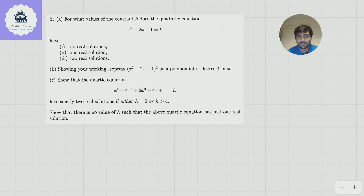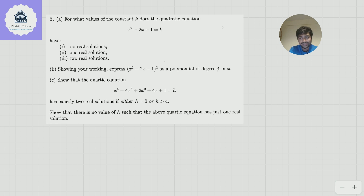Let's have a look at this problem. For what values of the constant k does the quadratic equation x squared minus 2x minus 1 equal k have no real solutions, one real solution, or two real solutions? Part B: showing your working, express x squared minus 2x minus 1, all squared, as a polynomial of degree 4 in x. Part C: show that the quartic equation equals h has exactly two real solutions if either h is 0 or h is bigger than 4, and show that there's no value of h such that the quartic has just one real solution. So this is all to do with quadratics leading up to quartics.